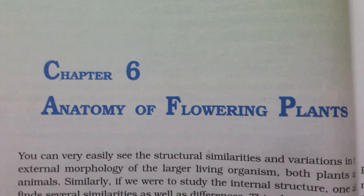6.1.2.2 Complex Tissues. The complex tissues are made of more than one type of cells and these work together as a unit. Xylem and phloem constitute the complex tissues in plants. Xylem functions as a conducting tissue for water and minerals from roots to the stem and leaves. It also provides mechanical strength to the plant parts. It is composed of four different kinds of elements namely tracheids, vessels, xylem fibers and xylem parenchyma. Gymnosperms lack vessels in their xylem.